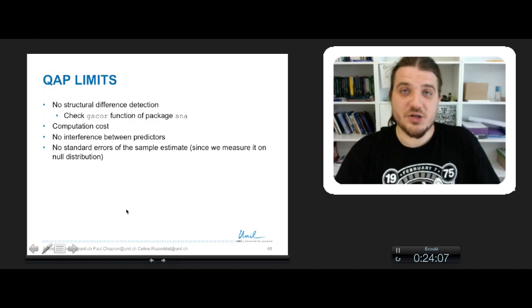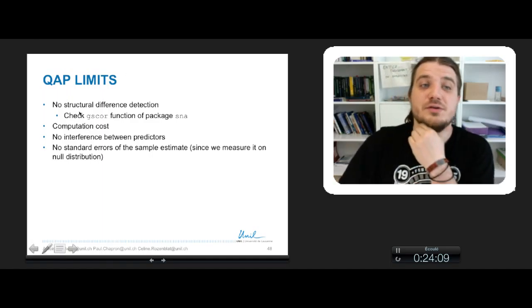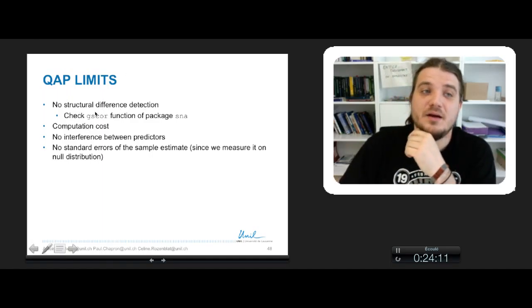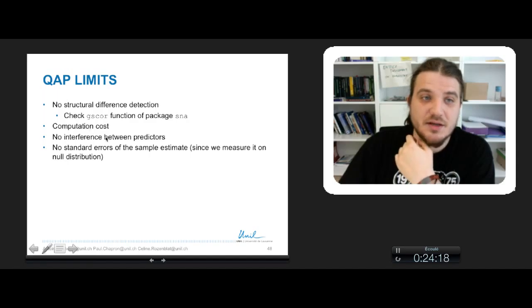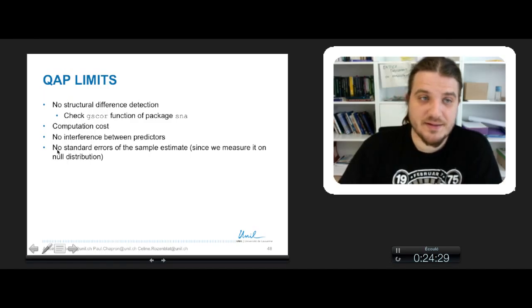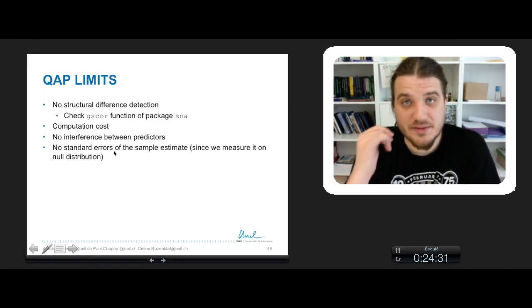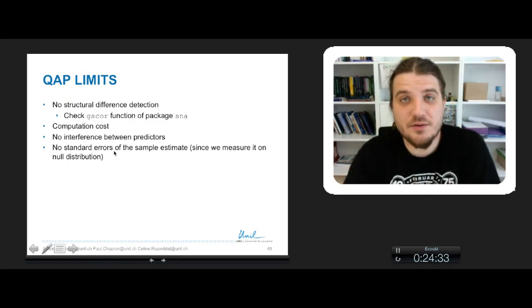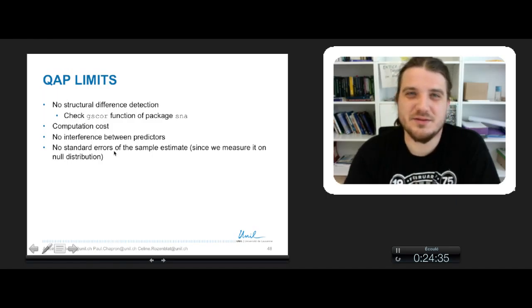Finally, some limitations of QAP. So no structural difference detection. To do that, you can check the GS-cor function of the package SNA with R, the computation cost. It doesn't handle the interference between predictors, so between terms when you make regression. Cross terms are not handled. And there is no standard error on the sample estimate because the error is measured on the null distribution, not on the actual correlation.